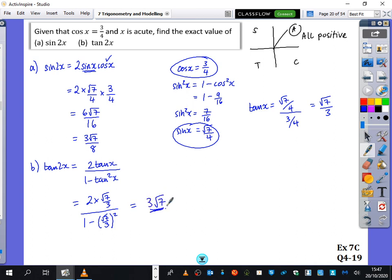And we get 3 root 7. And you can check that. Yeah, that's right, 3 root 7. You could check that by doing inverses and all sorts of stuff like that. But that's going to give us now enough information to be able to have a go at the questions from exercise 7C.